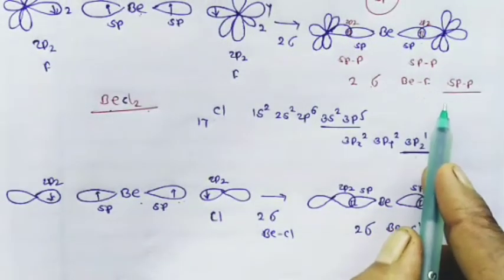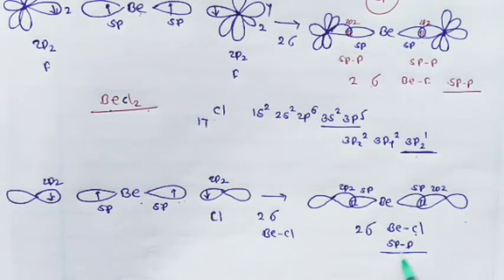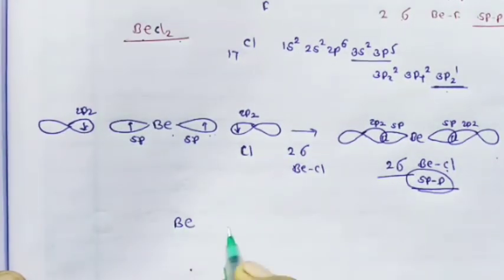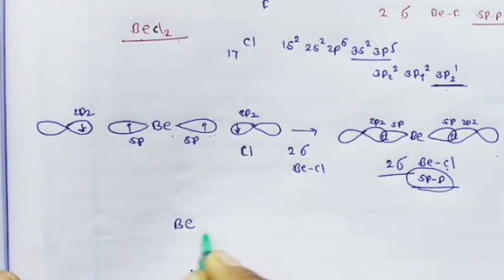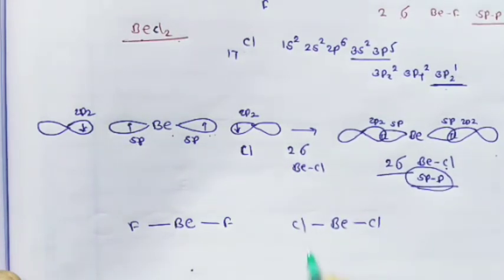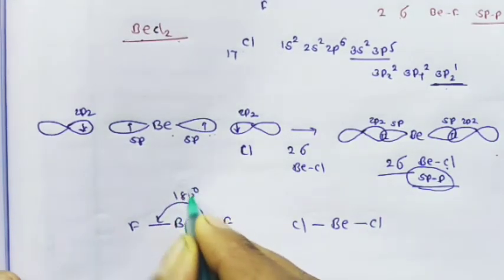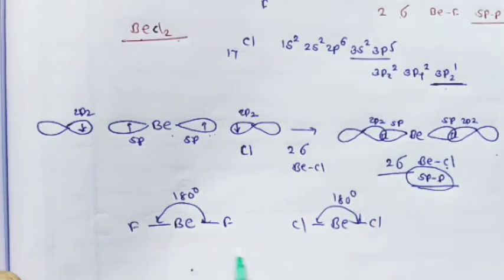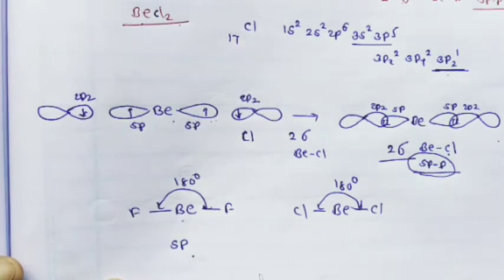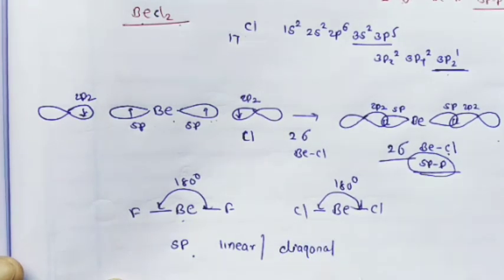Similarly, in both BeF₂ and BeCl₂, there is SP-p overlapping and formation of 2 sigma bonds. The 2 fluorine atoms and the 2 chlorine atoms are opposite to each other with a bond angle of 180 degrees. Both BeF₂ and BeCl₂ undergo SP hybridization. The geometry of these molecules is linear, also called diagonal, with a bond angle of 180 degrees.